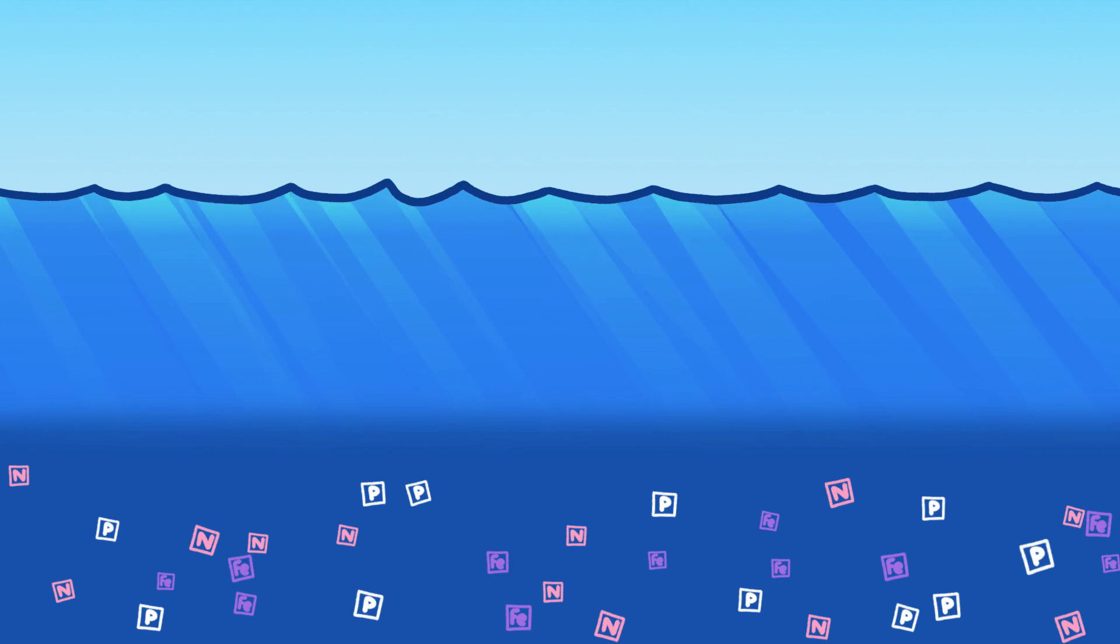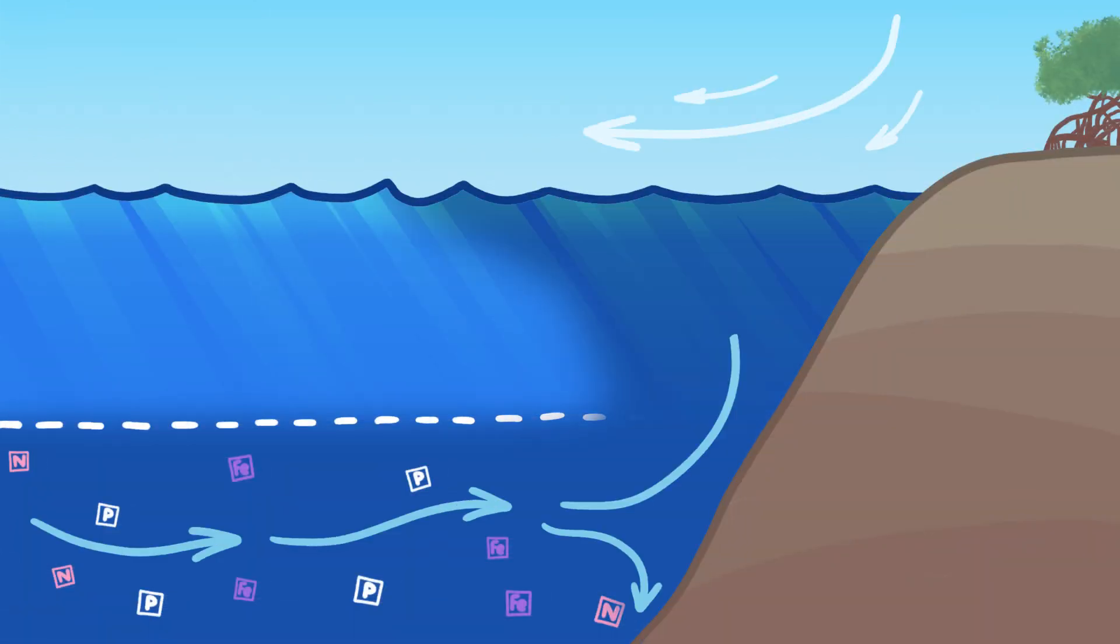Across most of the ocean, there's a sort of cruel separation between these ingredients, because sunlight only penetrates the top layer of water while nutrients sink. What's more, because the sun-warmed surface waters are less dense than the colder waters below, the two layers don't easily mix. It takes winds or a current to bring the nutrient-rich waters up to the sunlit surface.